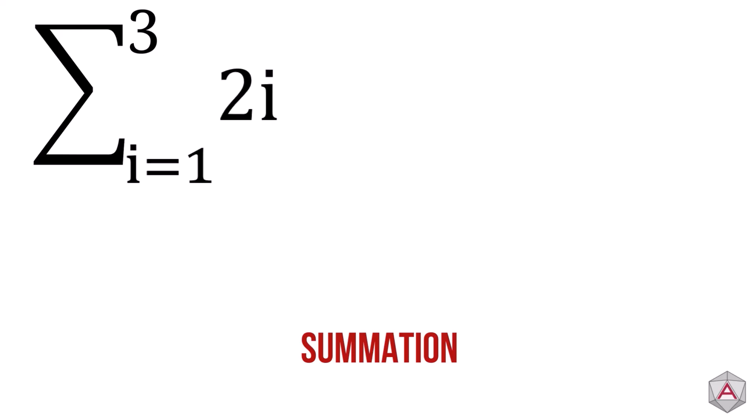This tells us for each iteration of i we need to times it by 2. So round 1 is 2 times 1, round 2 is 2 times 2, and finally round 3 is 2 times 3.